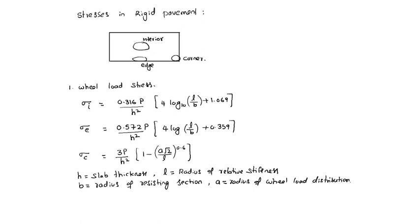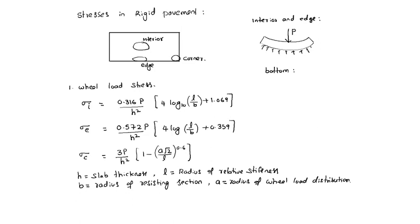Due to wheel load, interior and edge slabs will bend in a concave-up manner. Pressure from the bottom and central wheel load cause the slab to be concave up, so tensile stress develops at the bottom and compressive stress develops at the top.